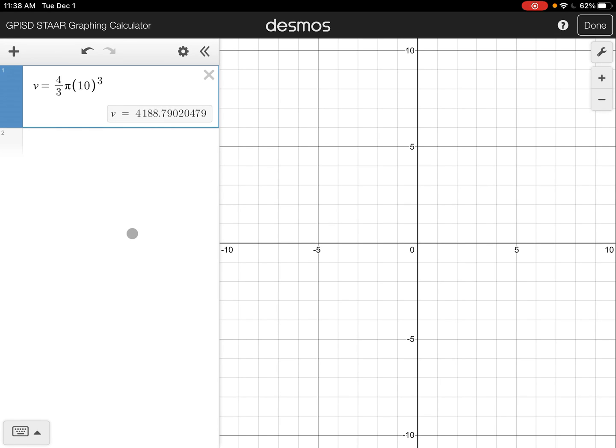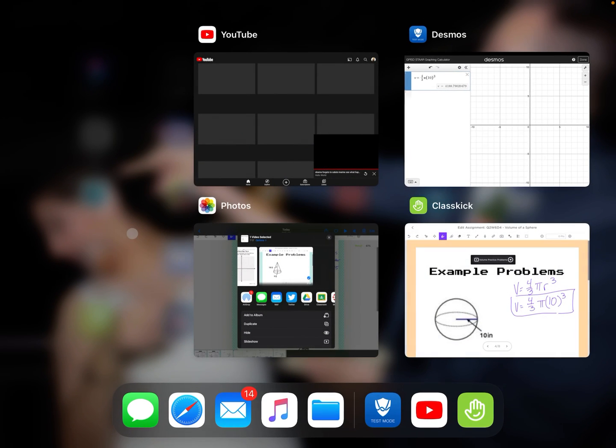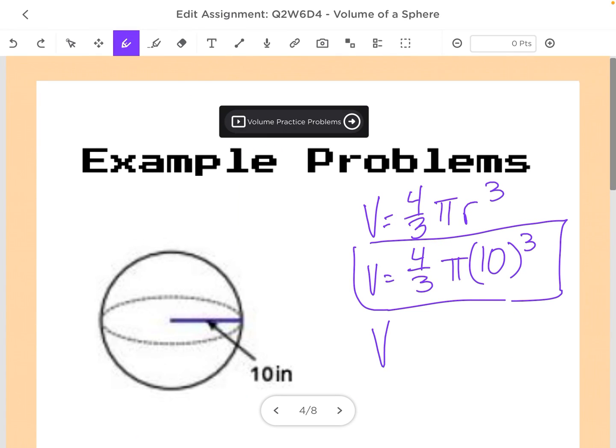All right, so the volume equals 4,188.79. And then I use my inches, and those are cubed, because for volume my unit is always going to be cubed.